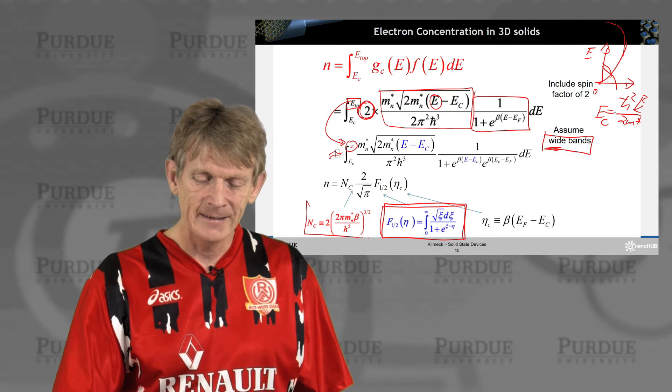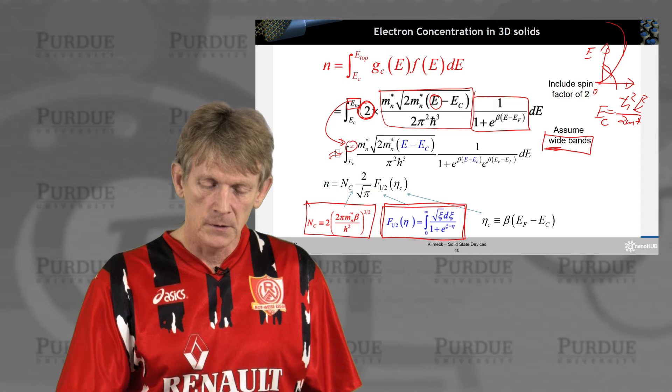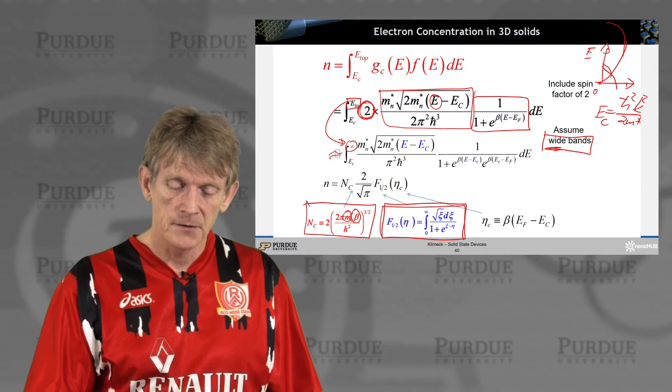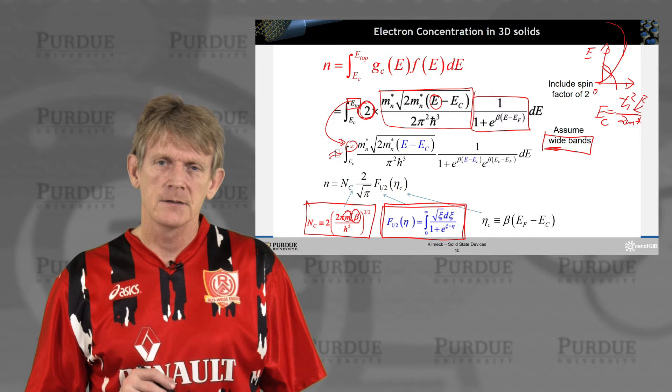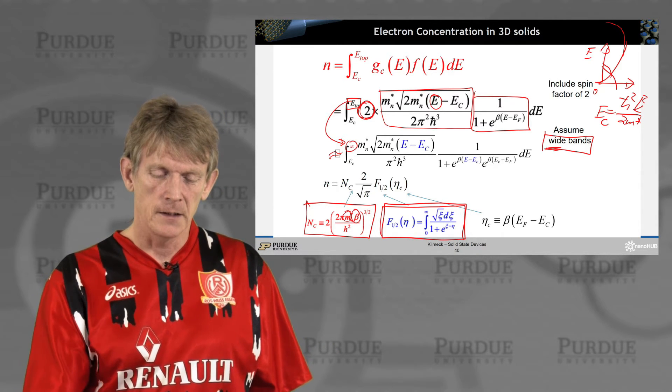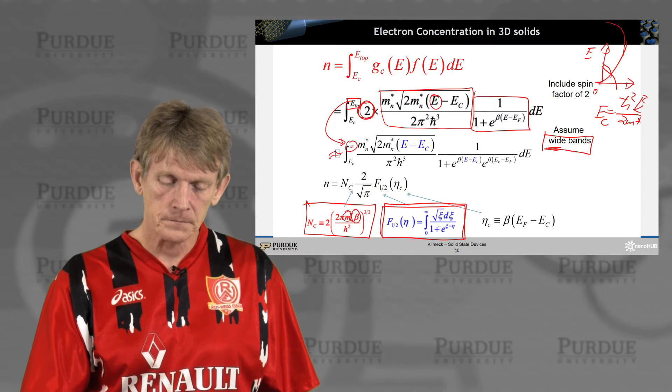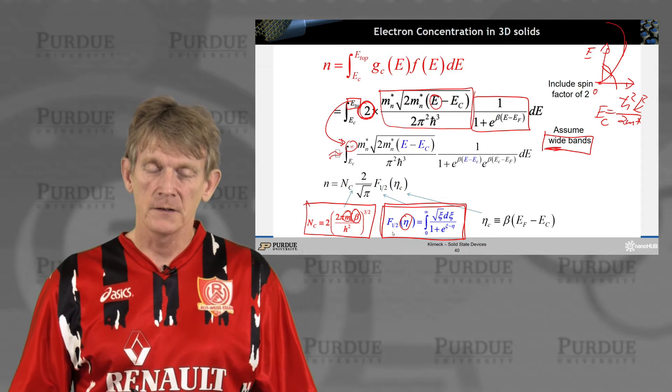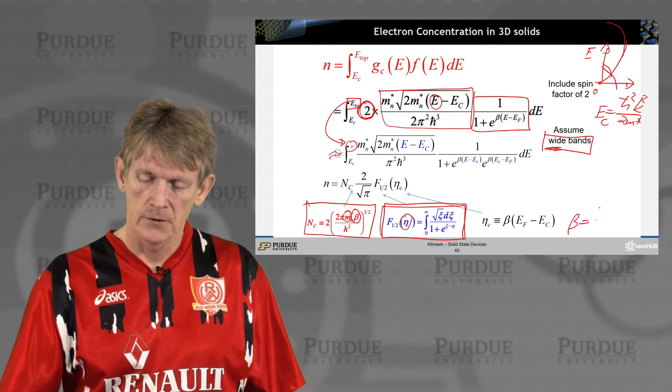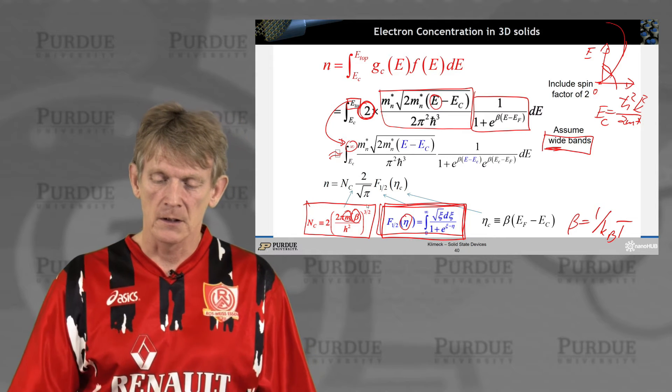Then you can carry out these integrals explicitly, and it's parameterized in a so-called Fermi integral function. And you introduce a coefficient called Nc, capital Nc, that goes with the effective mass and goes with beta, which is 1 over kt to the 3 half power. And this Fermi function is somewhat of a complicated beast. You can tabulate it. You can run a computer program on it. It's not a simple analytical result. You end up having to do this integral for any different values of eta. And eta is really the content of the exponential, which is EF minus EC over kt.